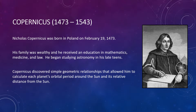Nicholas Copernicus was born in Torun, Poland on February 19th of 1473. His family was wealthy and he received an education in mathematics, medicine, and law. He began studying astronomy in his late teens. By that time, tables of planetary motion based on the Ptolemaic model had been noticeably inaccurate, but few people were willing to undertake the difficult calculations required to revise those tables.